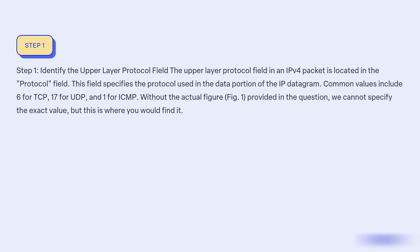Step 1: Identify the upper layer protocol field. The upper layer protocol field in an IPv4 packet is located in the protocol field. This field specifies the protocol used in the data portion of the IP datagram. Common values include 6 for TCP, 17 for UDP, and 1 for ICMP. Without the actual figure provided in the question, we cannot specify the exact value, but this is where you would find it.